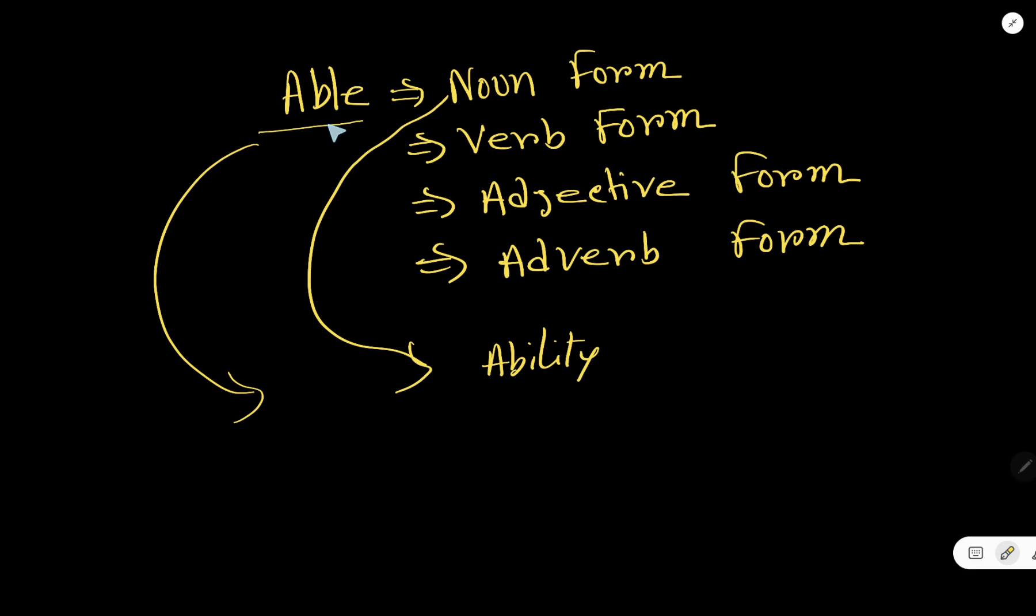That is, from able we are getting ability. We will eliminate E and we will add I-T-Y, ability.